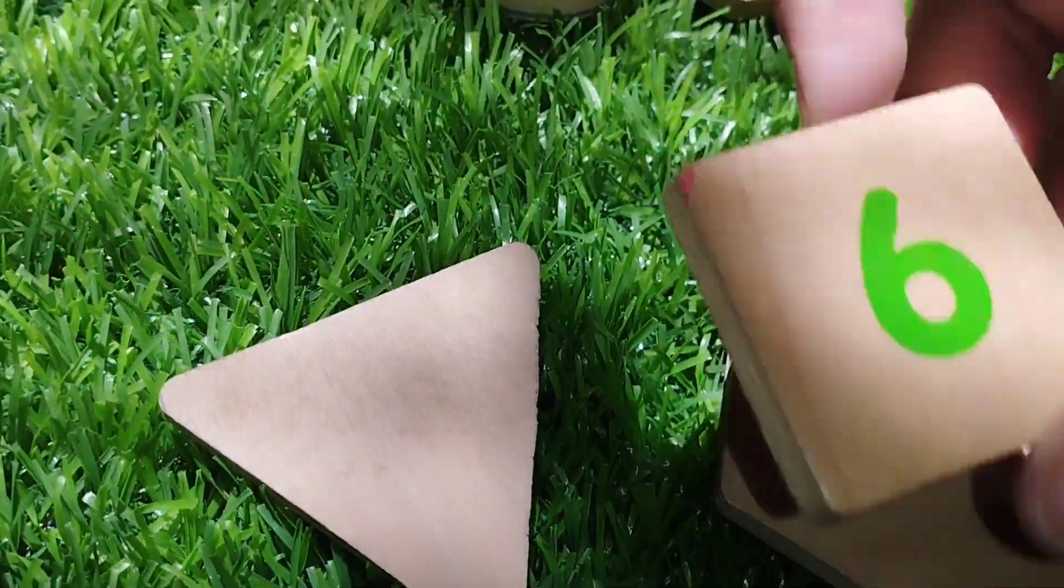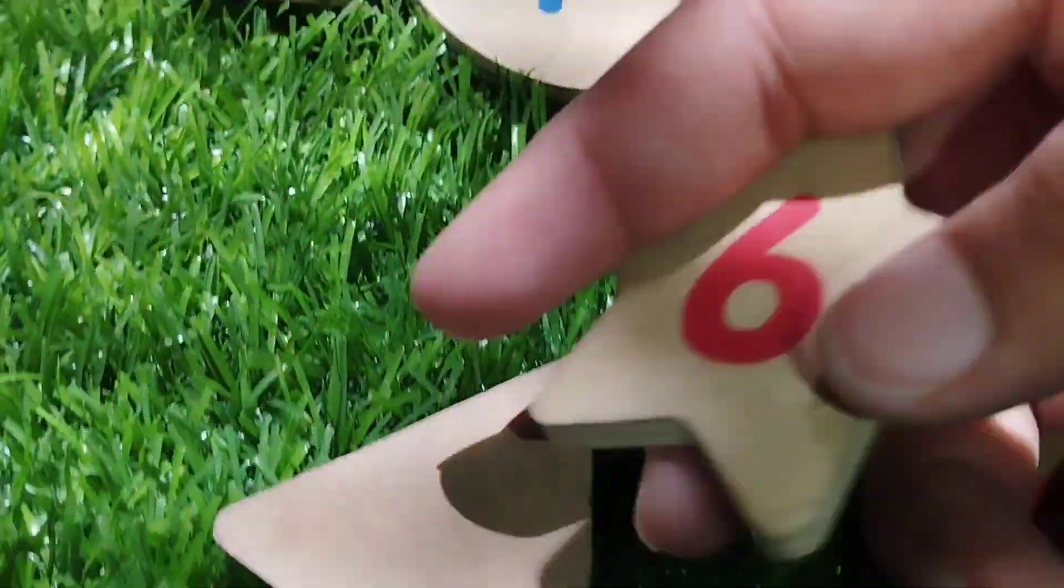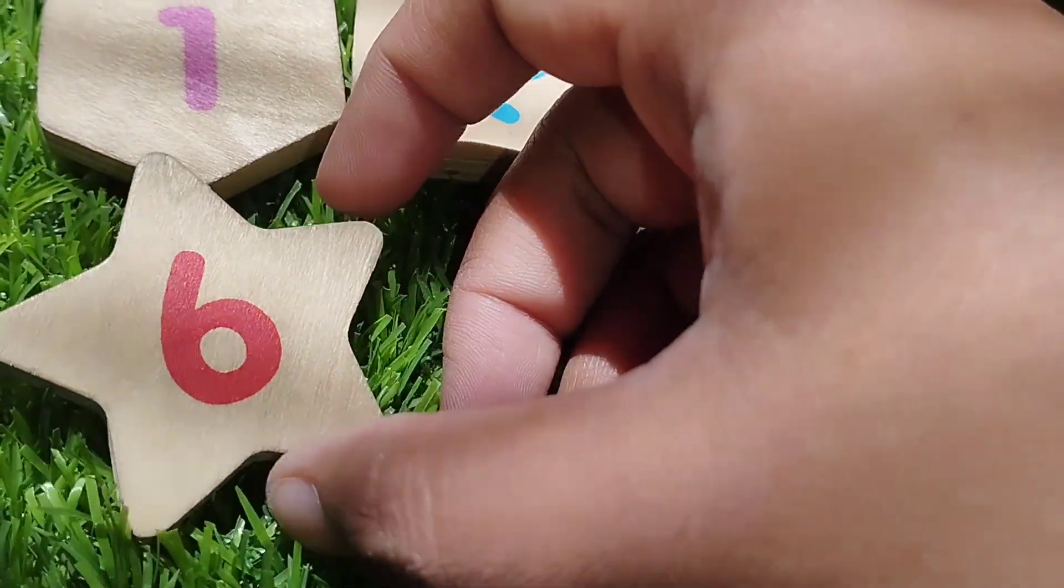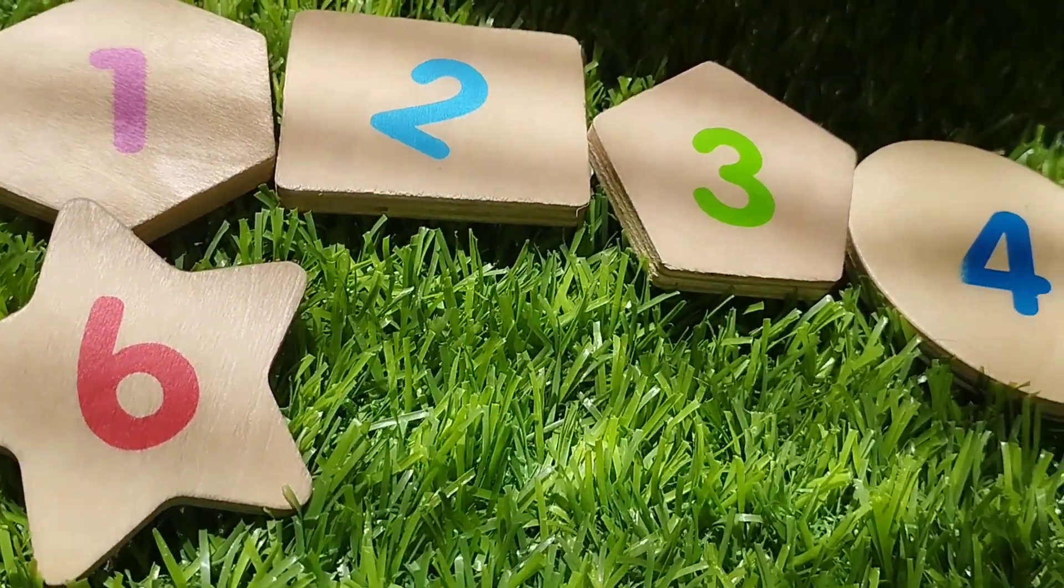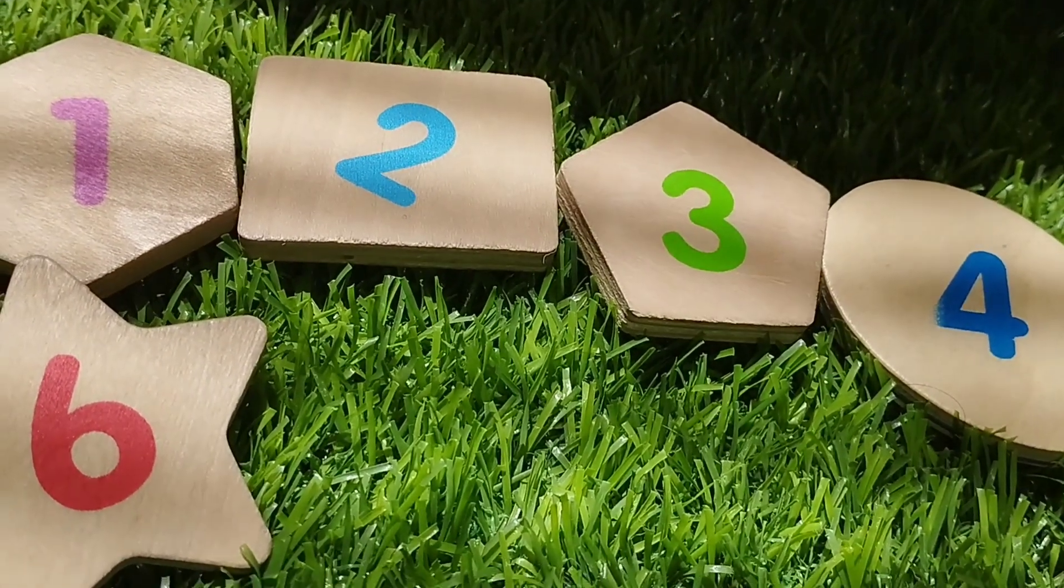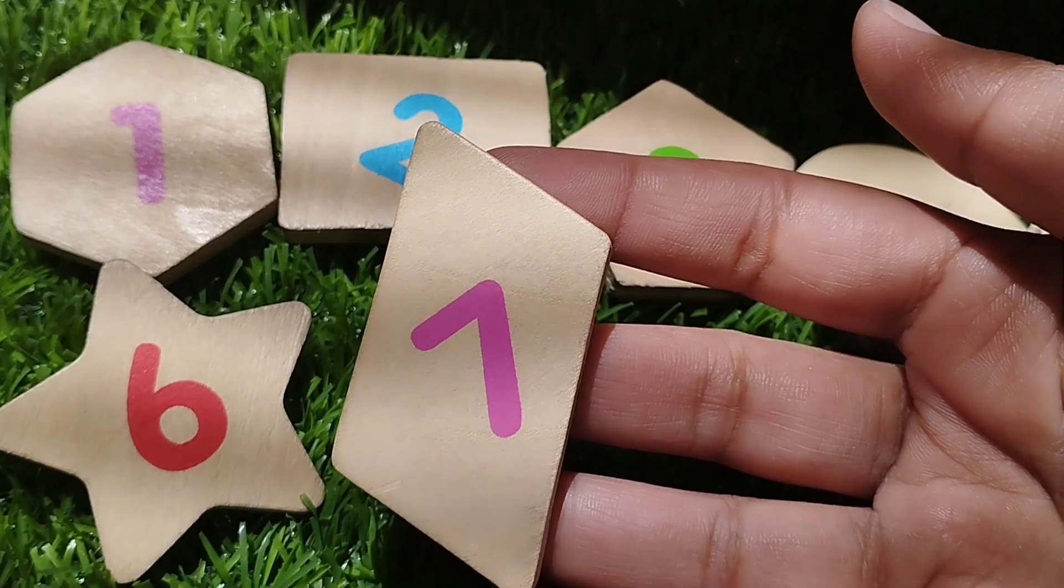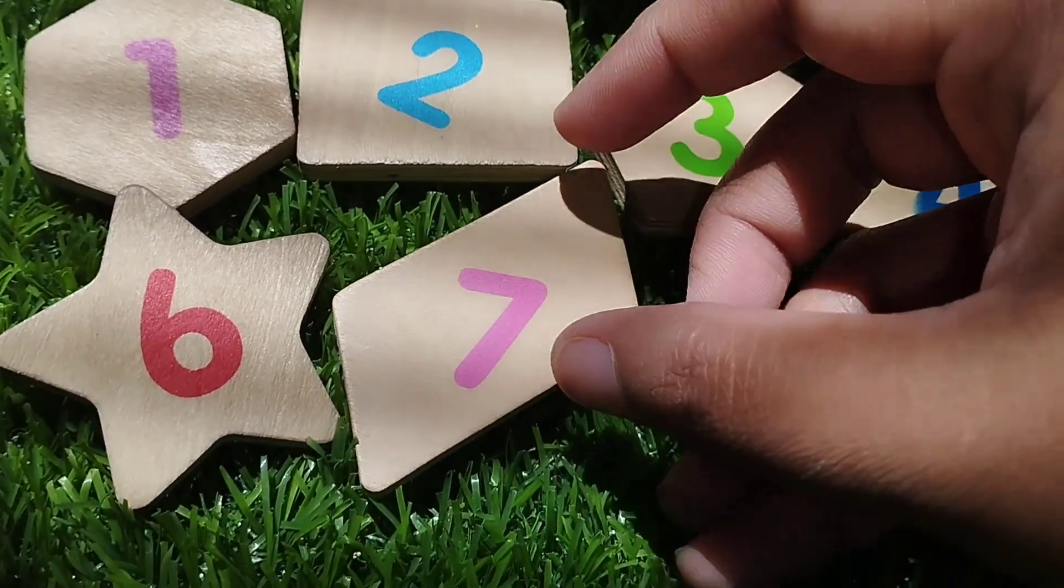The next one is star shape. The number is six. This is star. The next one is rhombus. The number is seven. Rhombus shape.